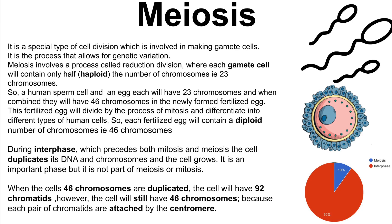Meiosis involves a process called reduction division, where each gamete cell will contain only half the number of chromosomes, which is haploid, and the amount of chromosomes is 23. A human sperm cell and an egg each will have 23 chromosomes, and when combined, they will have 46 chromosomes in the newly formed fertilized egg.